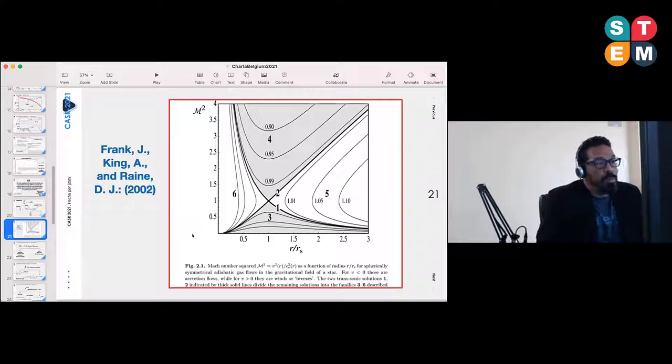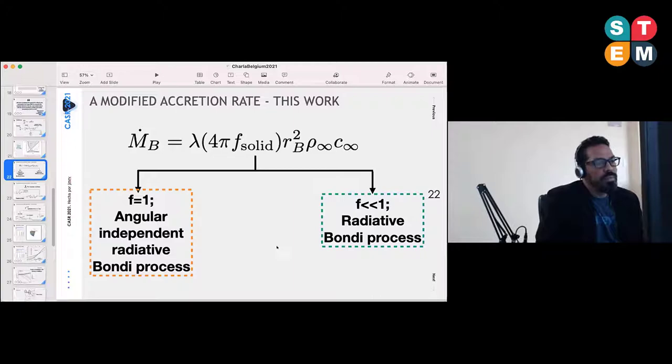We have solution type one which is an accretion solution, type two which are associated to outflows, type five solutions given by these curves here—this is Mach number and radius—type three, type four, and so on. Very important for some of the points we're making in the slides ahead.